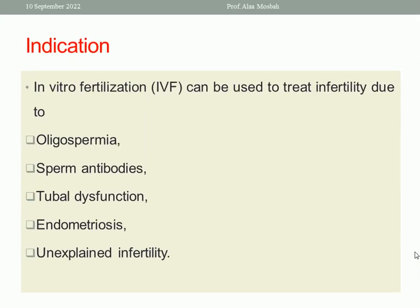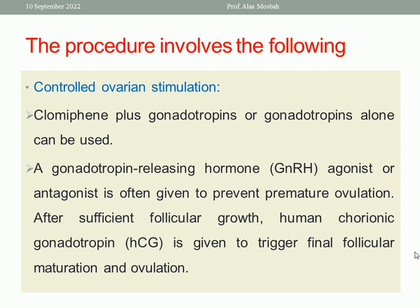IVF is used to treat infertility due to oligospermia, sperm antibodies, tubal dysfunction, tubo-peritoneal factors, endometriosis, and unexplained infertility. The procedure starts with controlled ovarian stimulation using clomiphene citrate plus gonadotropins, or gonadotropins alone. Sometimes GnRH agonist or antagonist is used to prevent premature ovulation.